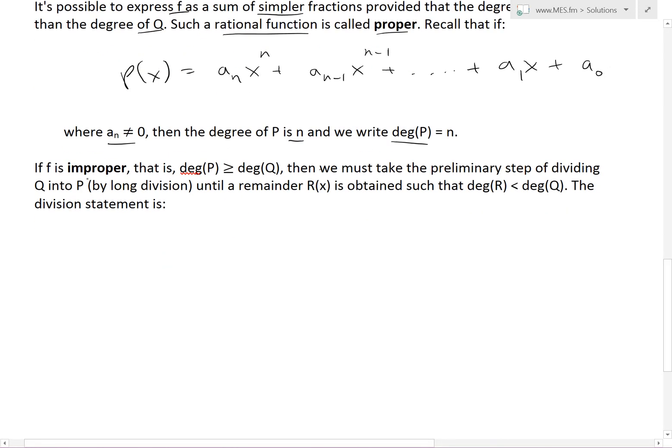So now if f is improper, that is basically the degree of p is greater than or equal to degree of q, then we must basically take the preliminary step of dividing q into p by long division until a remainder r of x is obtained, such that degree of r is less than degree of q, and the division statement for that is just f of x equals p of x over q of x. This equals, now we have the remainder, we have, this is what we get, then plus the remainder r of x over q of x. So, now s is a polynomial, so these are just polynomials, where s and r are polynomials. So, this is the result of the division, and then this is the remainder that you couldn't divide further.